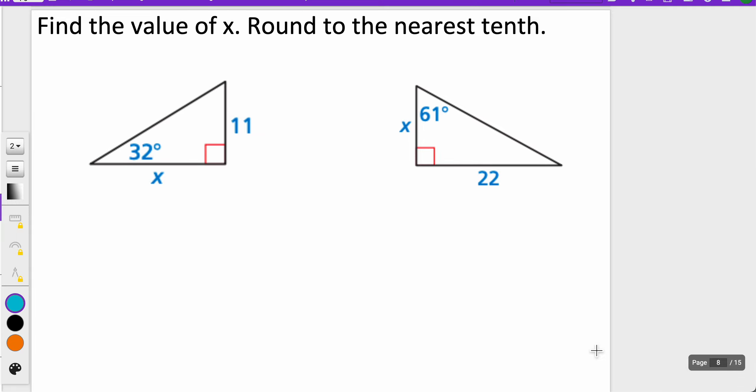The next thing we're going to do is talk about what happens when I'm given the degree measurement and I'm missing one of those. We're still using tangent, which is opposite over adjacent. So that means the tangent of 32 degrees is equal to the opposite, which is 11, over X.